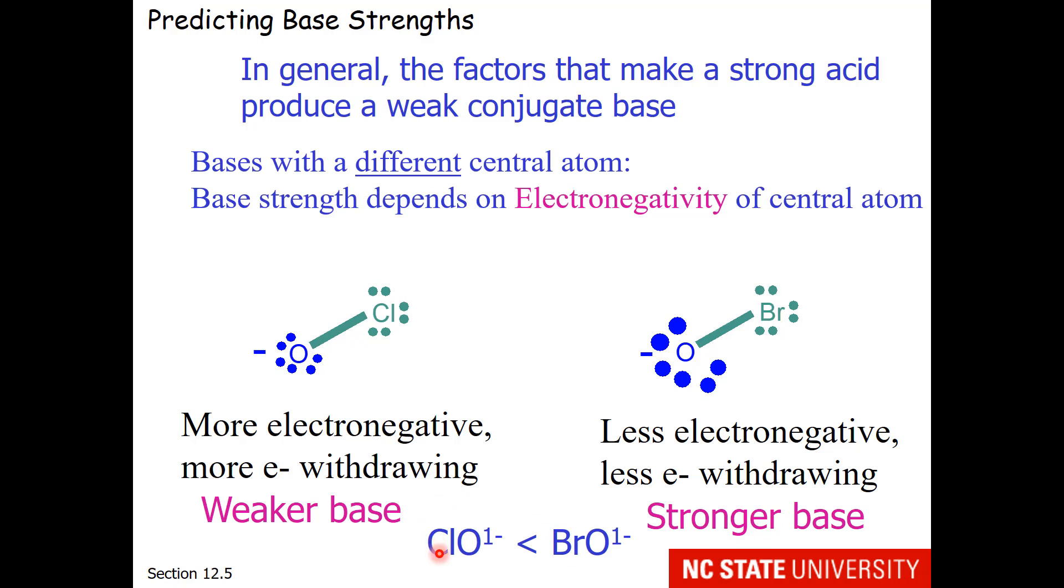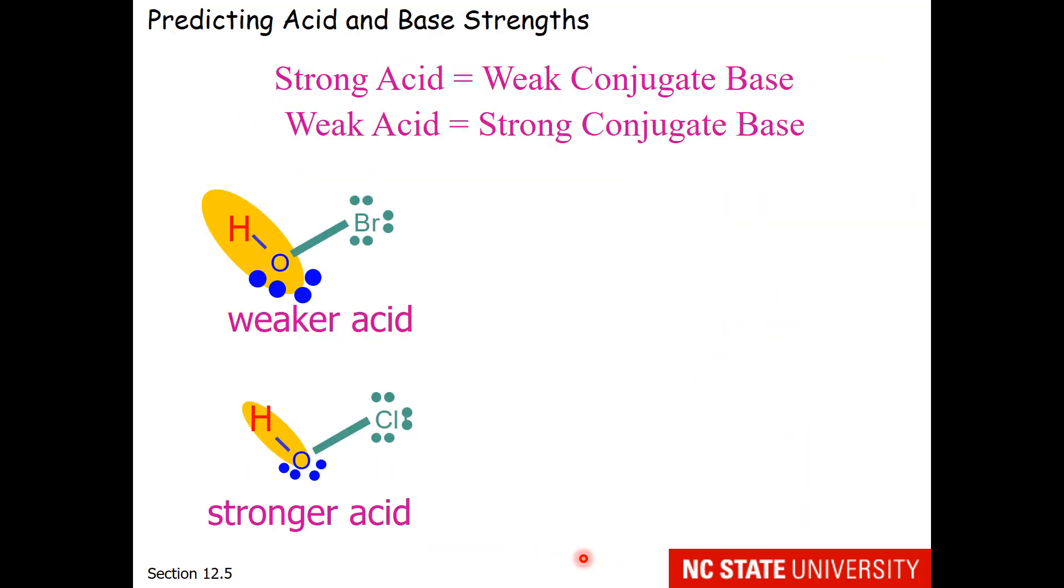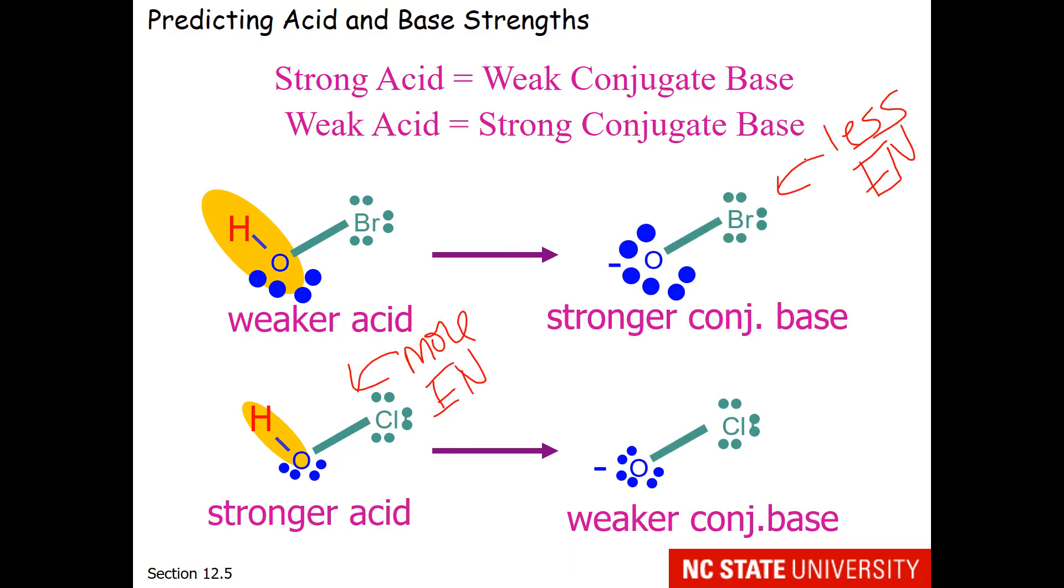So while the more electronegative atom produces the stronger base, the less electronegative atom produces the weaker base for oxoacids. Just a reminder that a strong acid produces a weak conjugate base and a weak acid produces a strong conjugate base. So our stronger acid has the more electronegative atom in the center and our stronger base has the less electronegative atom in the center.